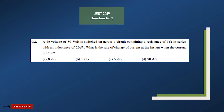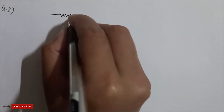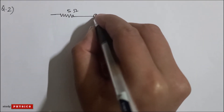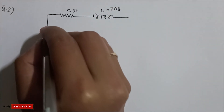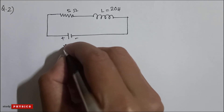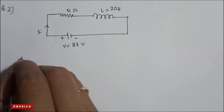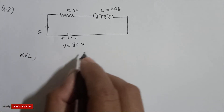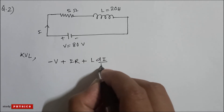Question 2: a DC voltage of 80 volts is switched on across a circuit containing a resistance of 5 ohms in series with an inductance of 20 henry. What is the rate of change of current at the instant when the current is 12 amperes? A 5-ohm resistance is in series with inductance L = 20 henry, connected to DC voltage V = 80 volts.